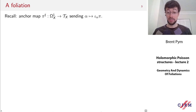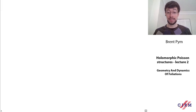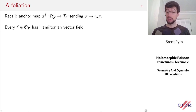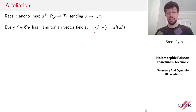Let's recall another piece of data introduced last time: the anchor map. This is the map which takes a one-form and produces a vector field simply by contracting that one-form into our bivector pi. In particular, if we have a function f, then this function has a Hamiltonian vector field, which is the vector field corresponding to the derivation of bracketing with f, or equivalently obtained by applying this anchor map pi-sharp to the differential of f.